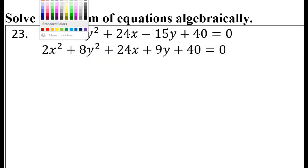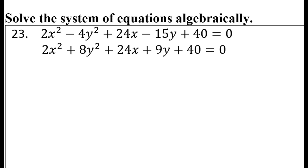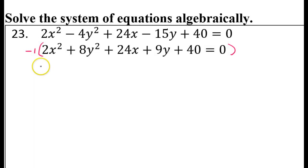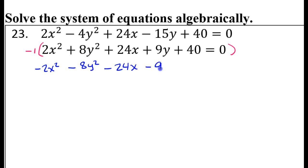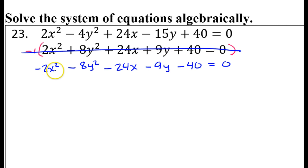We can do that if we multiply one of the equations by negative one — it will create opposites that cancel. So imagine that we multiply the bottom equation by negative one. My new equation will be negative 2x squared minus 8y squared minus 24x minus 9y minus 40 is equal to 0. I've multiplied by negative 1, so forget about the original equation — I now have this blue equation.